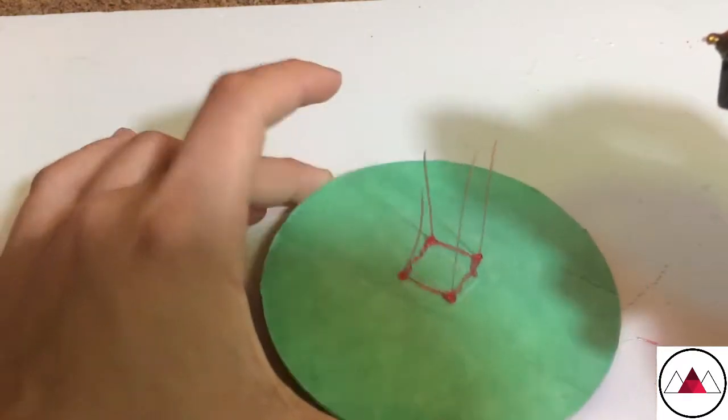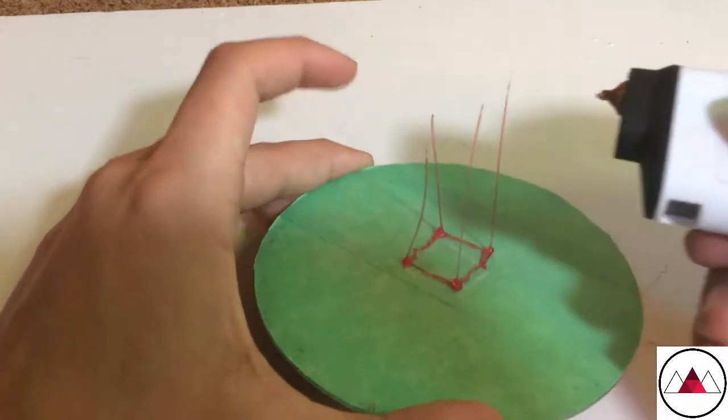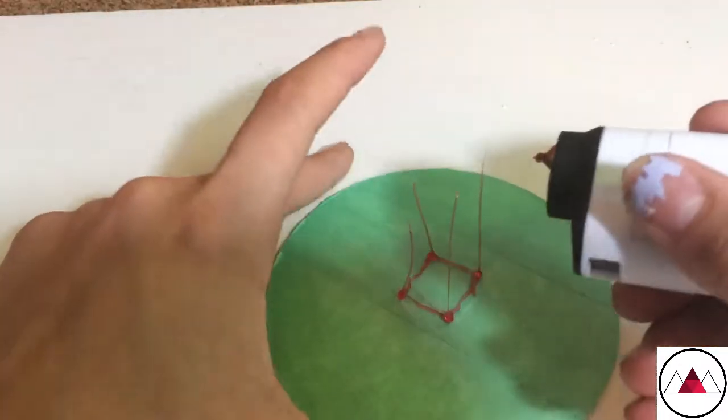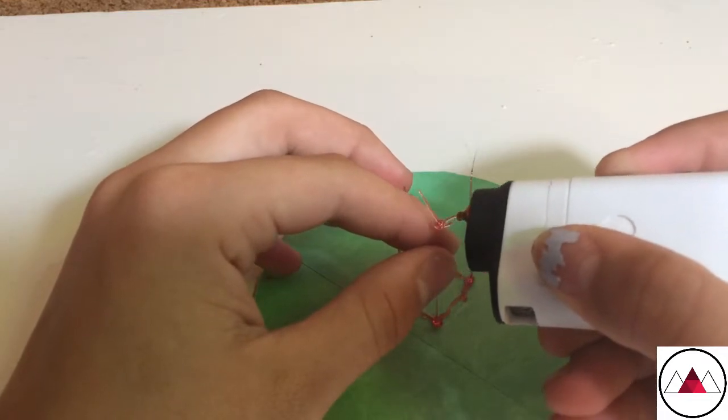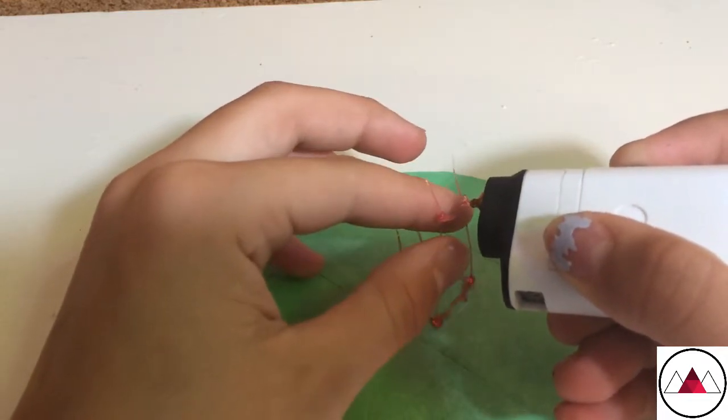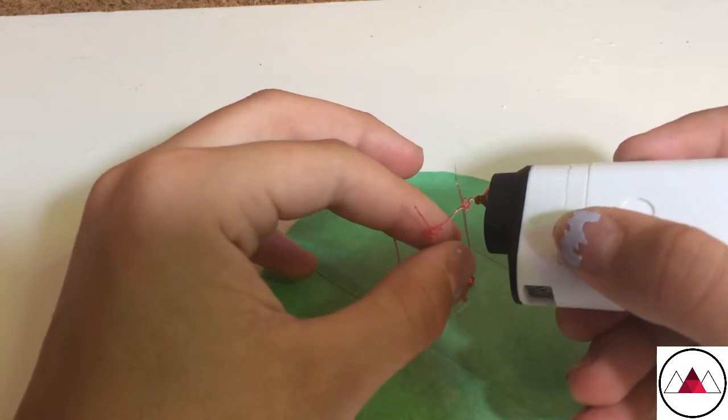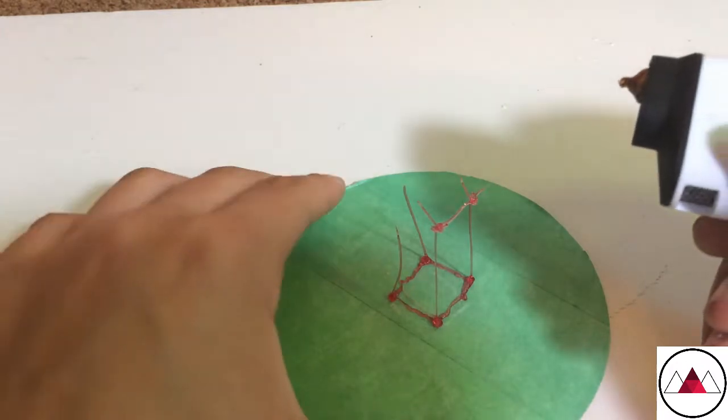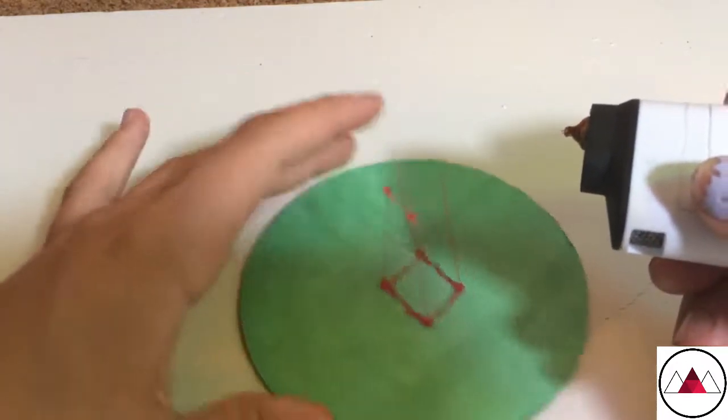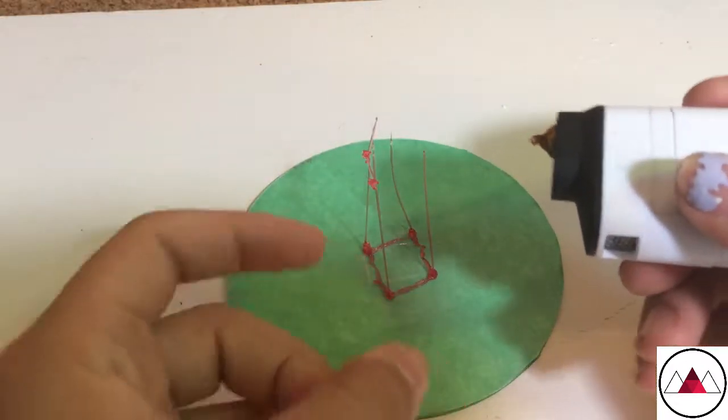So I have the walls done and now I'm just going to go across just like I did on the bottom. Sometimes you might need to use your fingers to hold the print like I am just to give it some more stability, but with ABS you might not have to do that.